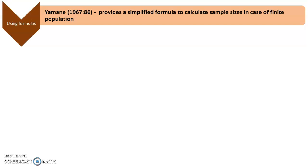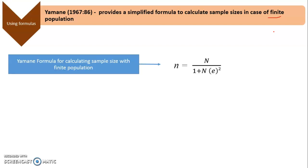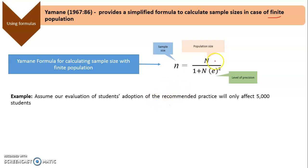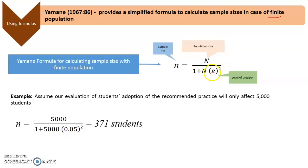Yamane's formula is a more simplified formula for calculating sample size when the population is known in advance (finite population). The formula is: n = N / (1 + N × e²), where n is the sample size, N is the population size, and e is the level of precision or margin of error. Using the same example with N = 5,000 and a precision of 5%, the result is 371 students. So Cochrane gives 358 and Yamane gives 371 for a finite population.